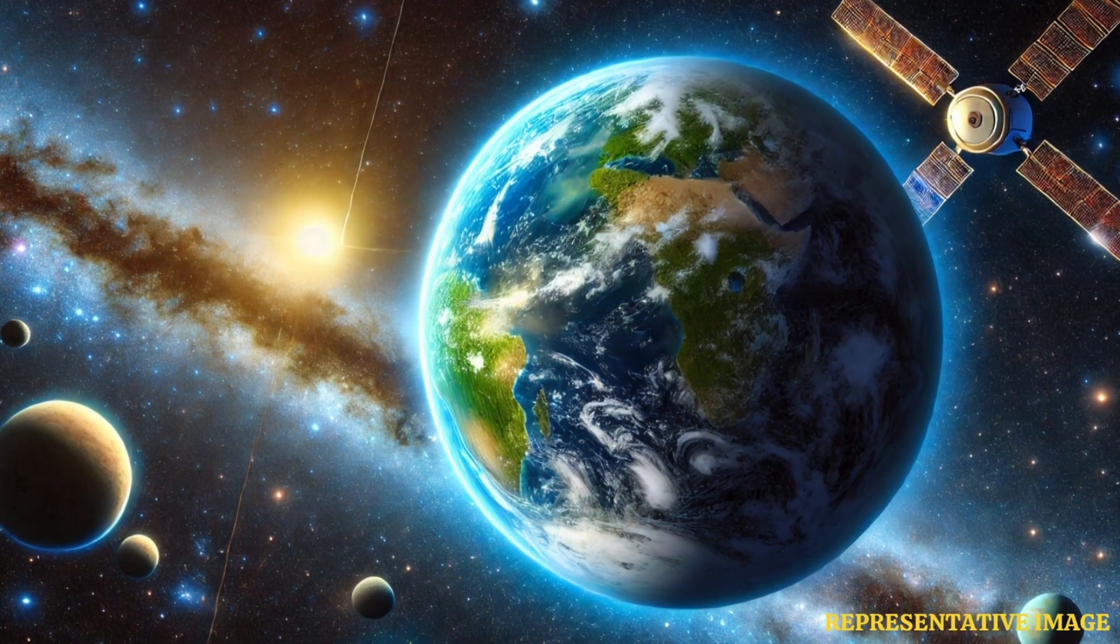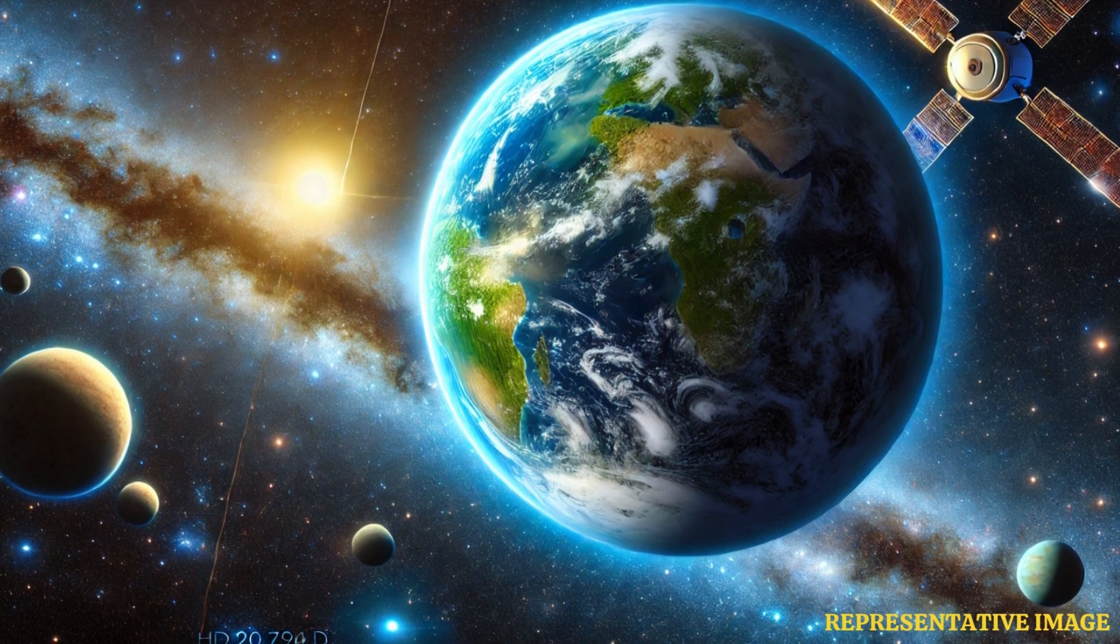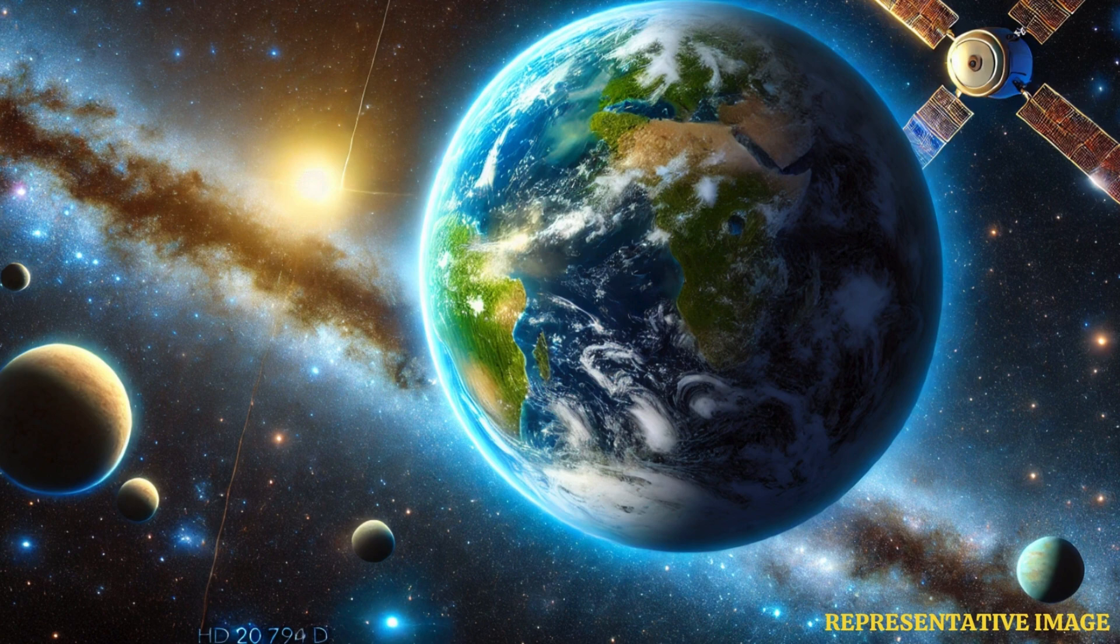This is not the first planet to have been found orbiting HD 2794. The star, only slightly smaller than our sun, has been of interest to scientists for years who have already found two other planets orbiting it that have also been termed super-Earths.